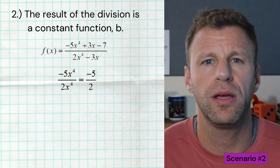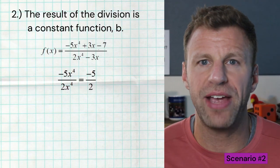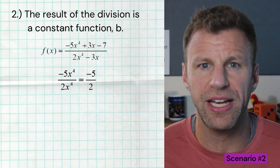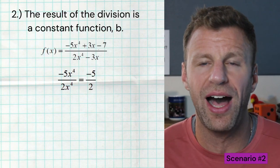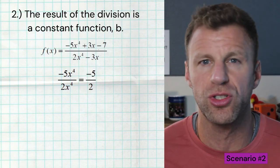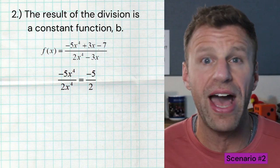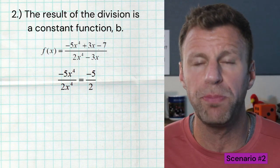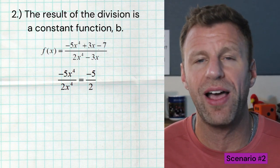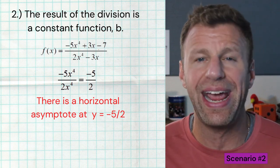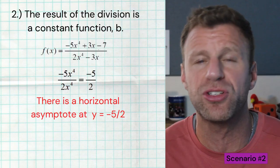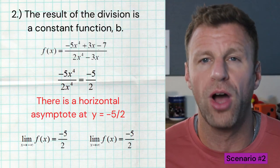Here's another example. We have a leading term of negative 5x to the fourth divided by a leading term of 2x to the fourth in the denominator. We divide, the x's all go away, and we get negative 5 halves — a constant. Again, simple information is conveyed: we now have a horizontal asymptote at y equals negative 5 halves, and our end behavior to both the left and the right is negative 5 halves. Nice and simple.